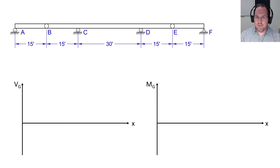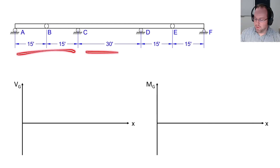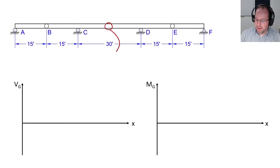Welcome back everyone. Today is for the bridge engineers or prospective bridge engineers. We're talking about influence lines. So let's start this off assuming we have a three-span bridge, 30 feet per span. And let's say I'm interested in my moment and shear demands right at the middle here. So let's call that moment at G and shear at G, at point G.